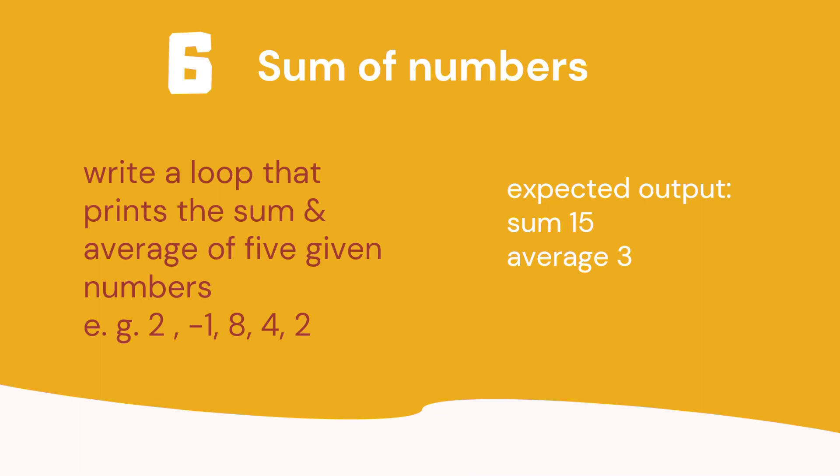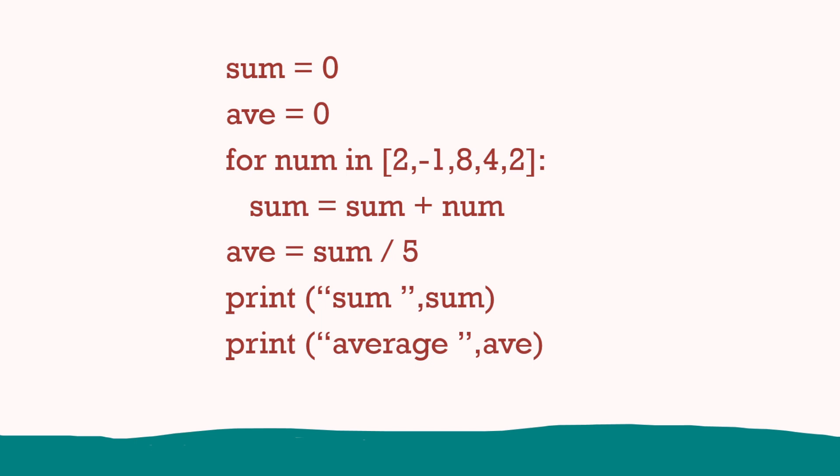Number 5: we've got another simple for loop, but the numbers start at 5 and go down to 1. Finally, the sum of numbers. We're going to write a loop and we're going to print the sum and the average. So we only need to do that after the loop. So we've got the numbers in a for loop. We add them together to make the sum. Then after the for loop, we can divide that by 5 to get the average. And then we just print out both the sum and the average.